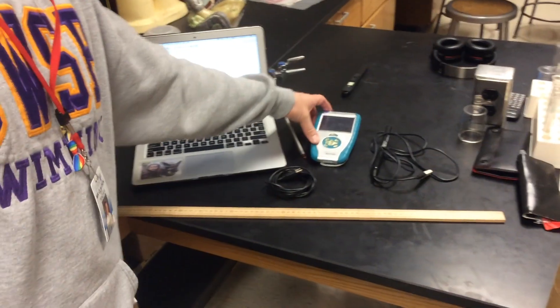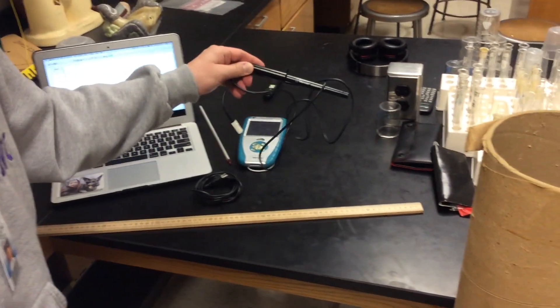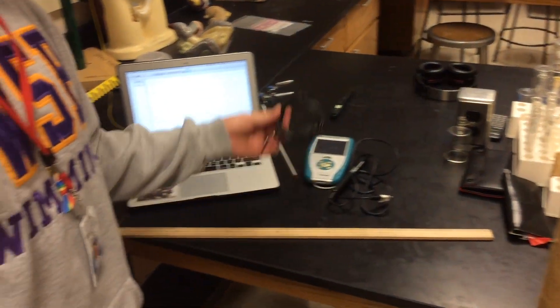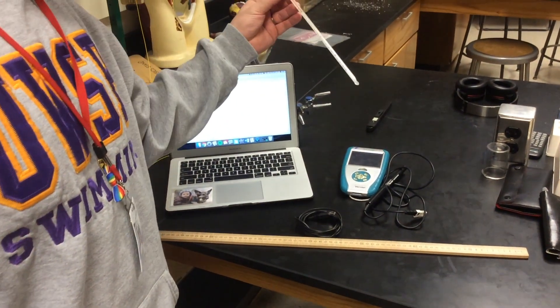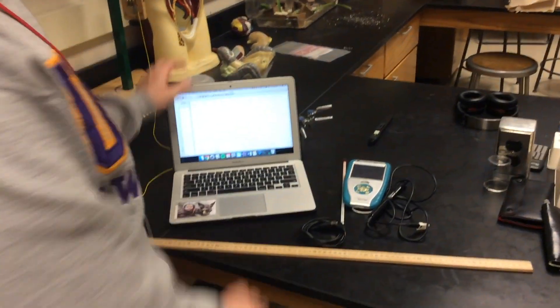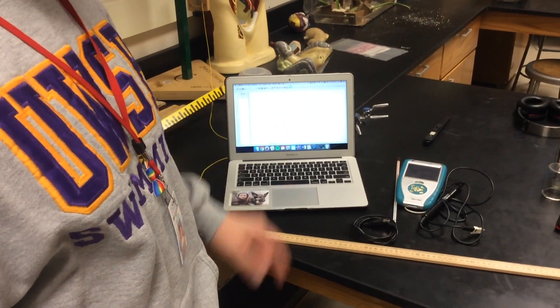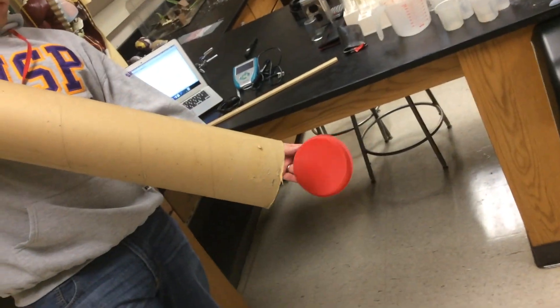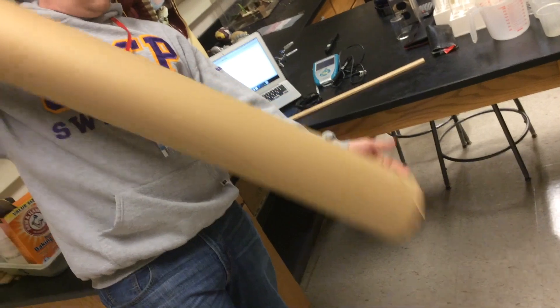First thing we need is a LabQuest. We're going to need the microphone, the USB cable, the thermometer, meter stick, you'll need your laptop running Logger Pro, and this big tube. Now the important thing to notice about the tube is it's got to have a red cap on the bottom and nothing else inside the tube.